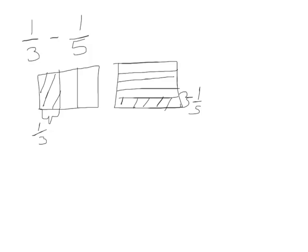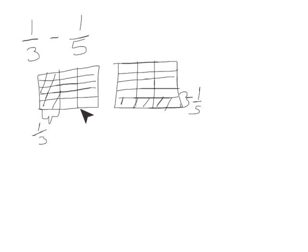One way to solve 1 third take away 1 fifth is to draw two rectangular fraction models: divide one into thirds and shade 1 third of it, divide the other into fifths horizontally and shade 1 third of it. Next, I would divide both models the way the other was divided so that I get like units — my like unit is 15.